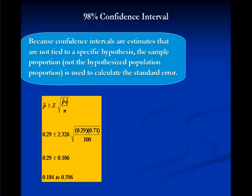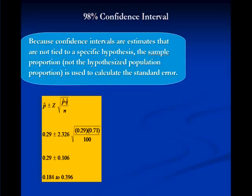The confidence coefficient for 98% is 2.326. And note in the confidence interval that we're using the 0.29 and the 0.71 based on the information in this sample. And doing a little bit of math, we come up with a confidence interval of 0.184 to 0.396. That interval includes 0.25. And so we can then conclude that the population proportion, at least it's plausible, could be less than or equal to 0.25.